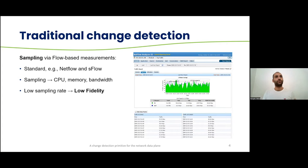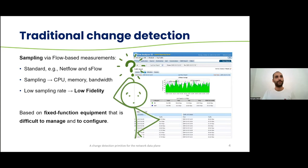Traditional change detection techniques usually resort to sampling via flow-based measurements to keep track of per-flow information within CPU, memory, and the bandwidth available. However, depending on the sampling rate used, this can lead to very low fidelity in the results obtained. Also, these kinds of techniques are based on fixed function equipment that is difficult to manage and to configure.